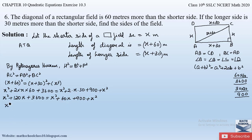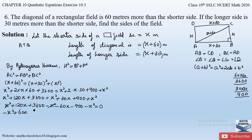Sending all terms to the right-hand side: x² + 120x + 3600 − x² − 60x − 900 − x² = 0. The x² and −x² cancel, leaving: −x² + 60x + 2700 = 0.